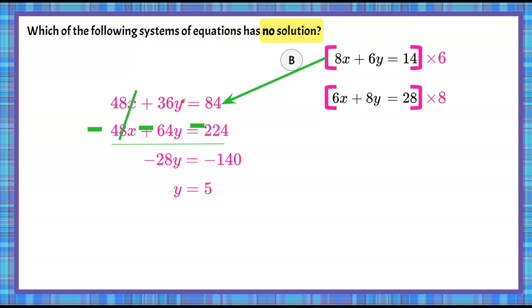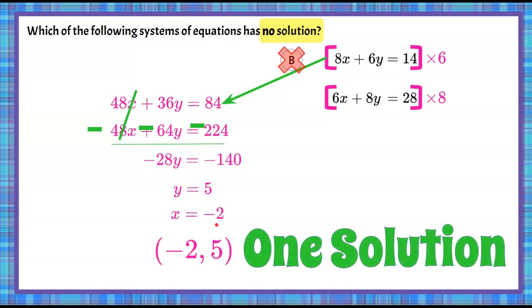Now if you put y as 5 in one of your equations, you're going to come up with the value negative 2 for x, and we can see that that is one solution. So we could have stopped right here, because as soon as we found the value for y, we knew we were going to find a value for x, and we had one solution. We could also look here, and because I could not force both coefficients of x and both coefficients of y to be the same or opposite, then we knew that we were going to have one solution.